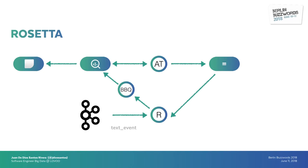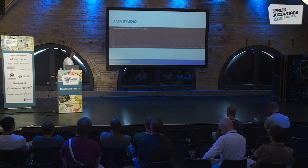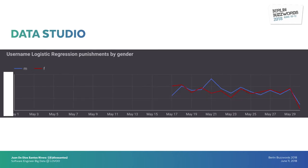How do I make sure my results are actually good? How do I know if I'm doing something right? We have Data Studio for that. Data Studio is Google's cloud solution for building dashboards using data from different sources. Since we have all the data in BigQuery, it's quite straightforward. The dashboard shows, for example, the ratio between the number of punishments we create and the number of daily active users — we can see the number of punishments is really, really low, under 1% for all these days. We also have a graph showing punishments produced by one of the Rosetta models: the username logistic regression.